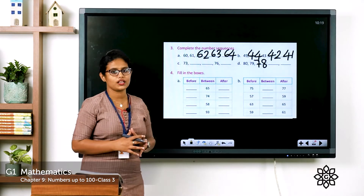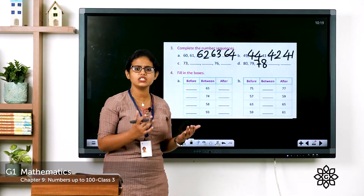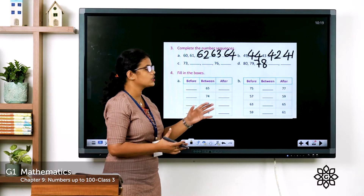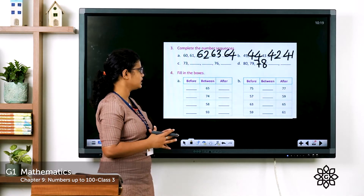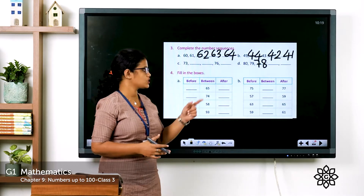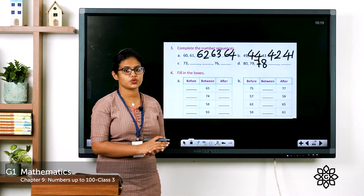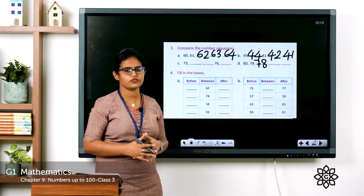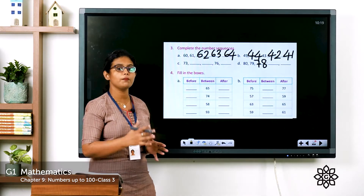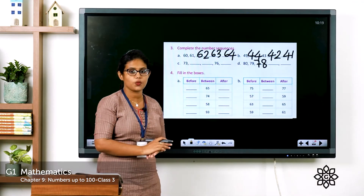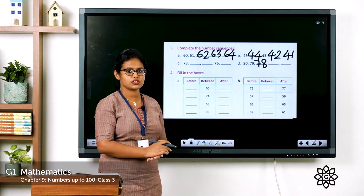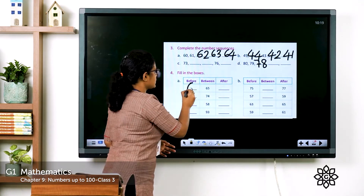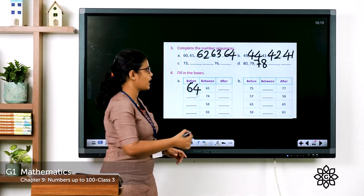Coming to the next one — fill in the boxes. You've already learned about before, after, and between numbers. Let's revise. Here you can see between numbers: 65. Write the number before 65 and after 65. Start counting from 60: 60, 61, 62, 63, 64, 65, 66. The number before 65 is 64 and after 65 is 66.